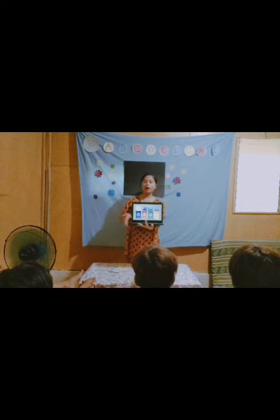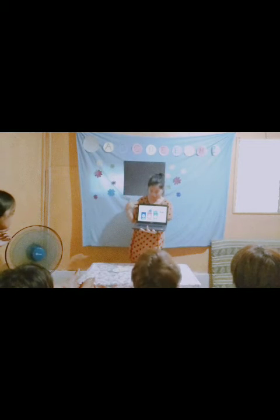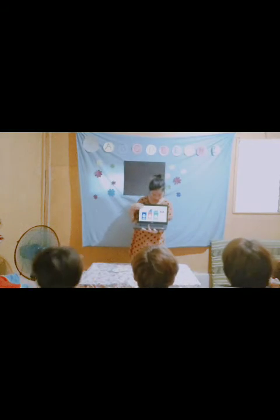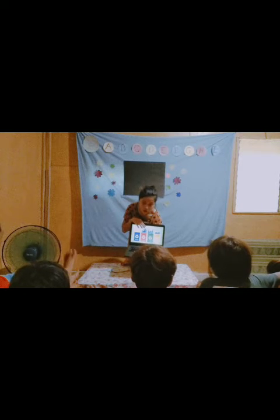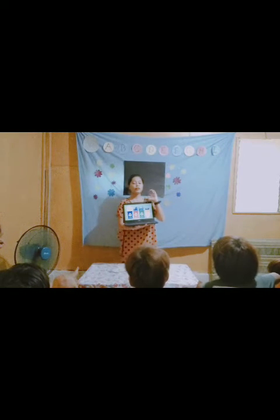Here in non-biodegradable, the government proposed four trash cans for this: paper, plastic, glass, and metal. The blue can is for paper, the red for plastic, the green for glass, and the yellow for metal. That's how you segregate non-biodegradable waste. Do you understand? Yes.